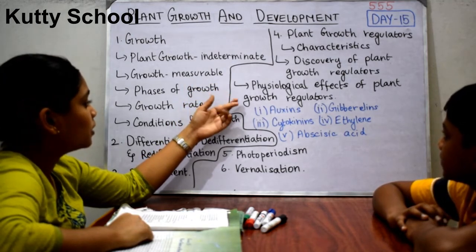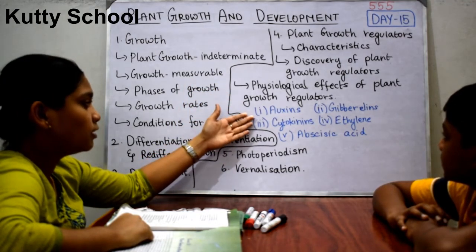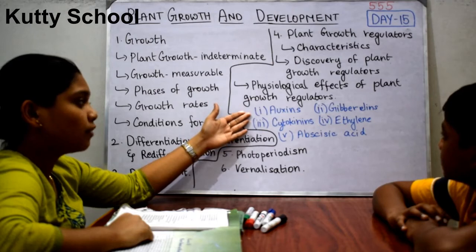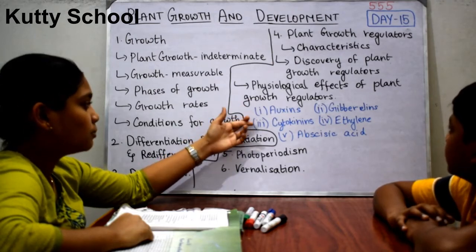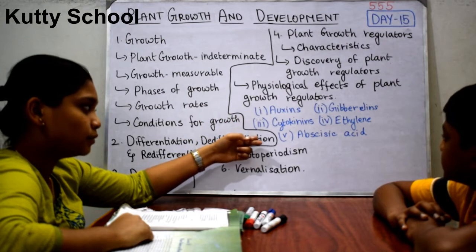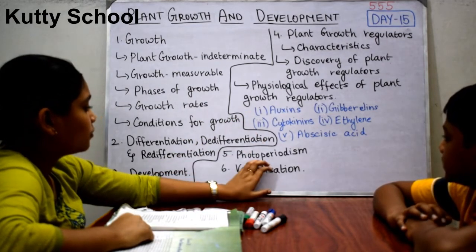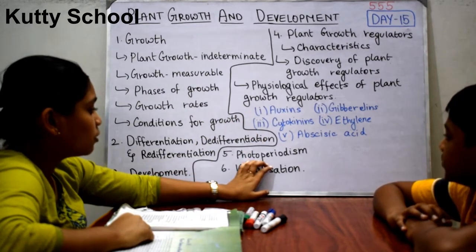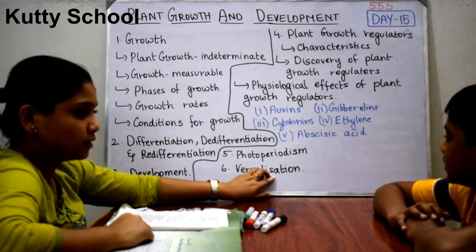Under physiological effects there are five sub-topics: auxins, gibberellins, cytokinins, ethylene, and abscisic acid. The fifth topic is photoperiodism and the sixth is vernalization.